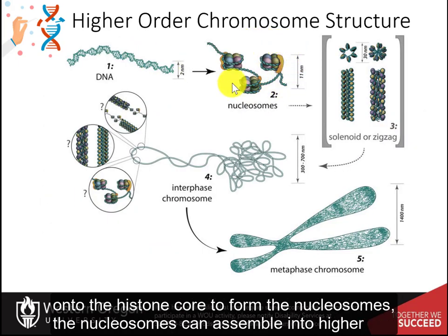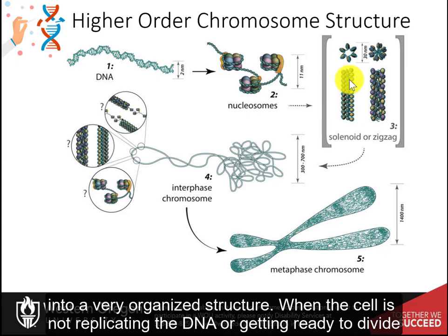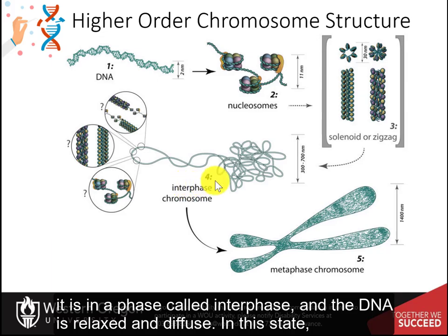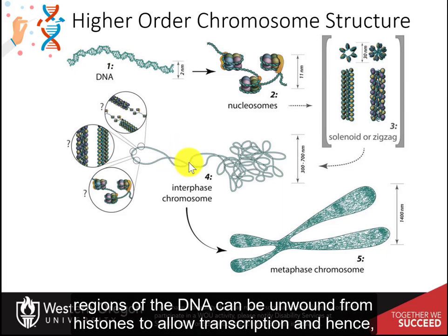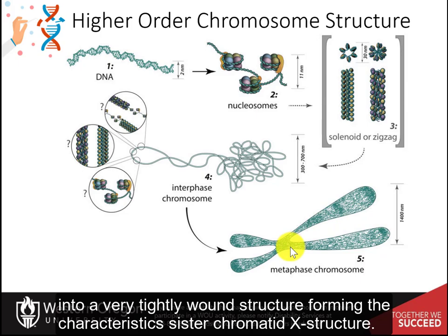Once the DNA is wrapped onto the histone core to form the nucleosomes, the nucleosomes can assemble into higher order structures, such as solenoids or zigzags. The solenoids and zigzags can then be stacked into a very organized structure. When the cell is not replicating the DNA or getting ready to divide, it is in a phase called interphase, and the DNA is relaxed and diffused. In this state, regions of the DNA can be unwound from the histones to allow transcription and hence gene expression to take place. During DNA replication and cell division, the DNA condenses into a very tightly wound structure, forming the characteristic sister chromatid X structure.